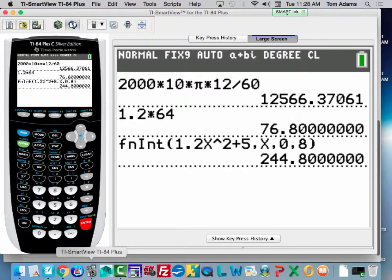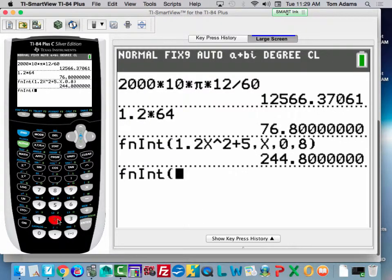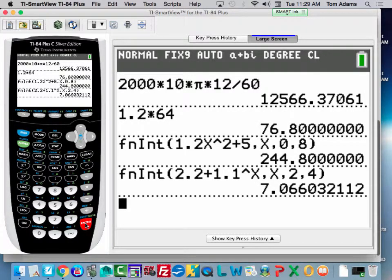Yeah, I just got to plug it in here. So what I'm going to do is I'm going to, again, hit math, option number 9. My function was 2.2 plus 1.1 raised to the x, comma. We're integrating over x. What was my lower limit? 2. What was my upper limit? 4. Well, bang, with the bacon sizzle, what does that tell you? 7.066 bushels were consumed during 1972.